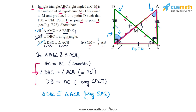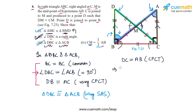Finally, for part four, we use the result from part three. Since triangle DBC and triangle ACB are congruent, their hypotenuses are equal: DC equals AB by CPCT. Therefore half of DC equals half of AB. Since M is the midpoint of DC, half of DC is CM.